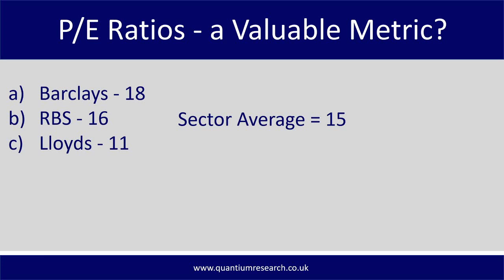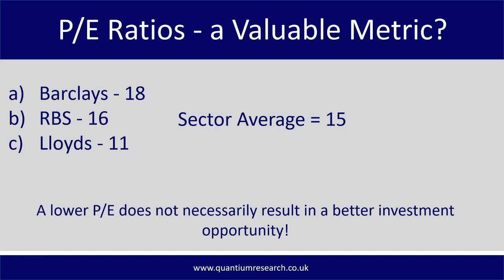Lloyds has the lowest price-to-earnings ratio, so in terms of earnings multiple it is the cheapest. But this is dependent on so many different factors. Lloyds could have such a low P/E ratio because it may have internal issues as a business — maybe it hasn't been able to deliver on performance expectations. Maybe Barclays is doing the best out of all of them, and that's why investors believe it deserves a higher premium, a higher earnings multiple, a higher price-to-earnings ratio. A lower P/E does not necessarily result in a better investment opportunity.